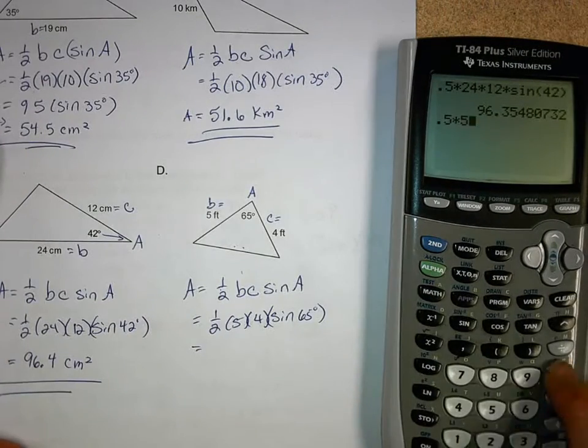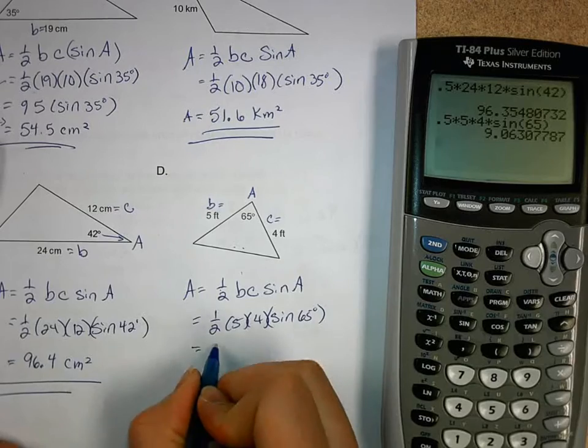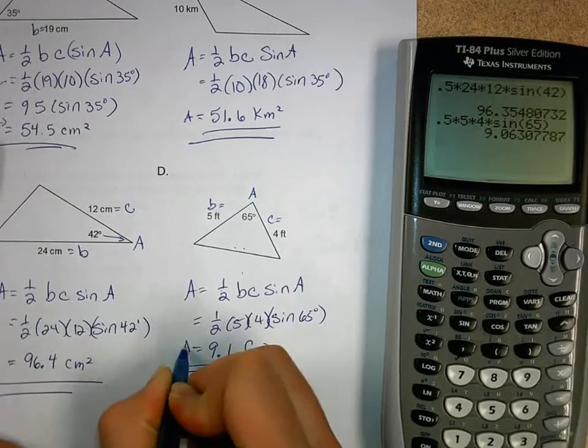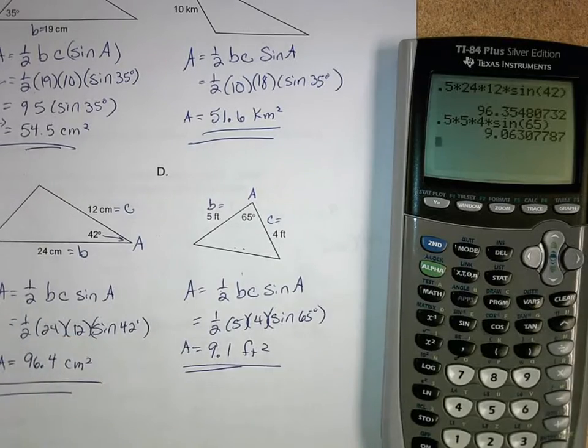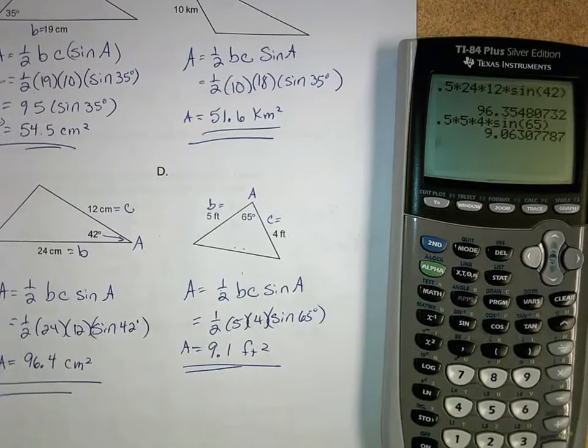0.5 times 5 times 4 times the sine of 65. We end up getting here 9.1 square feet. All right guys, that's how you calculate the area of a triangle when you know side, angle, side. Hopefully that's helpful.